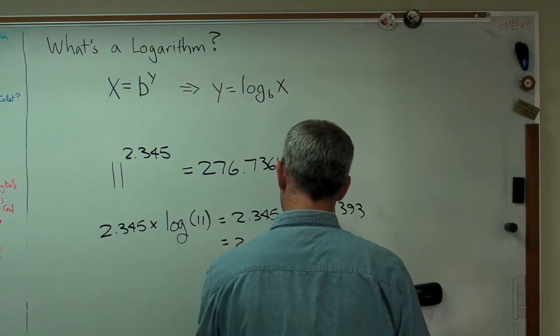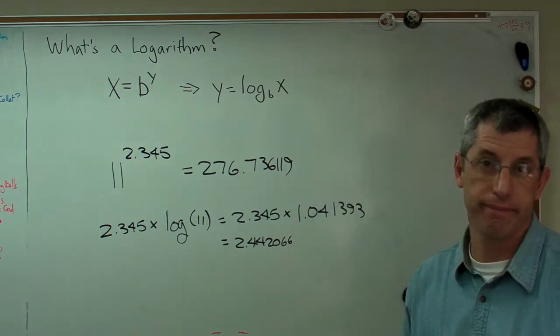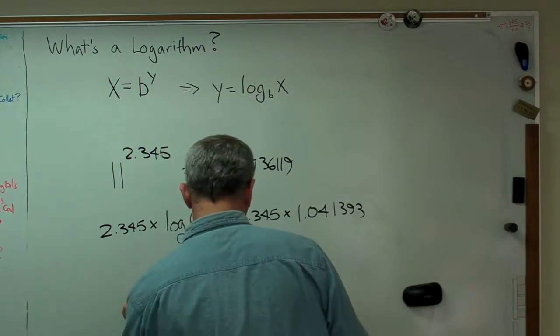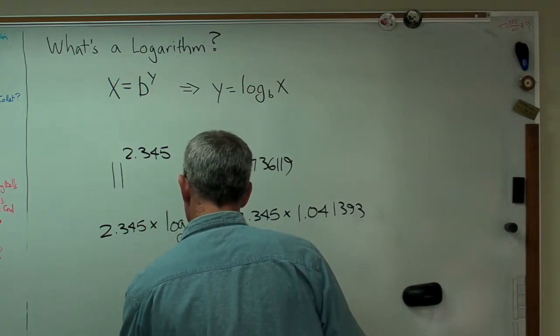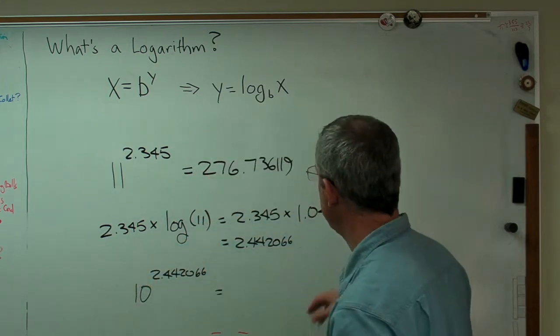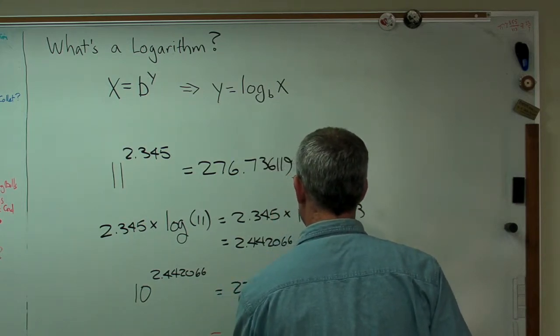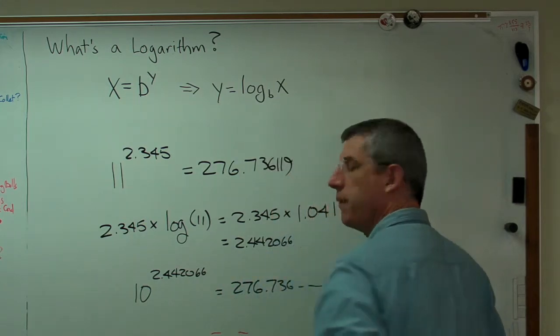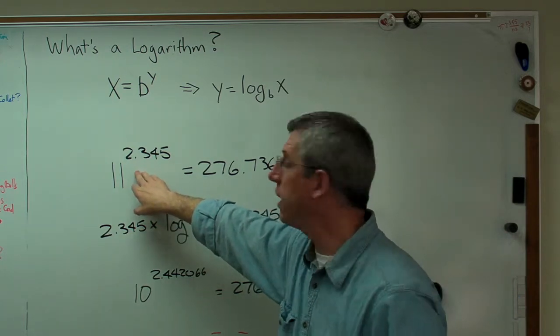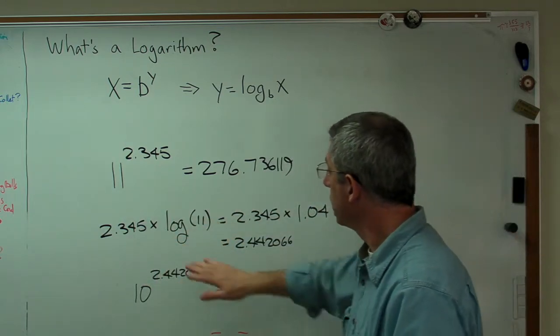So that is 2.345 times, and log of 11 is 1.041393, a little bit more than 1 because that's a little bit more than 10. Multiply that out, you get 2.442066. Next thing you do is raise 10 to that power. So 10 to the 2.442066 power is indeed that number again, 276.736 whatever. So there we've got it. We've taken something that's extremely difficult to do by hand and turned it into something that's a lot less difficult to do by hand.